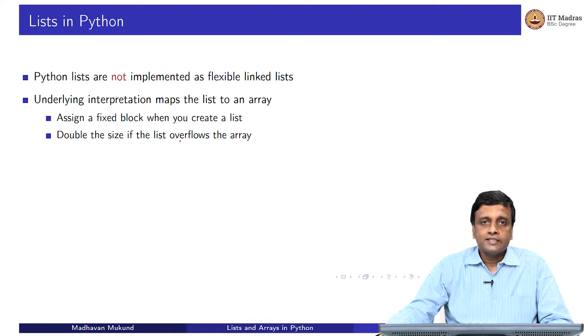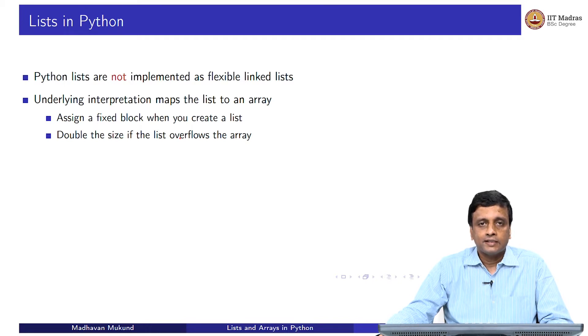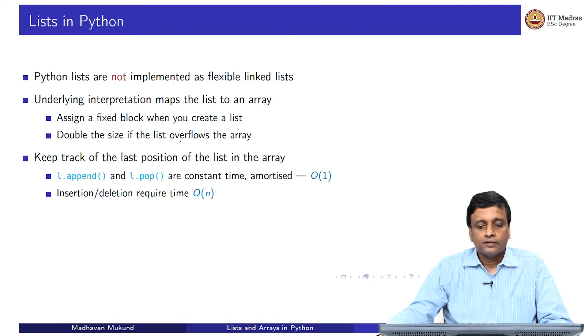In fact, lists in Python are not implemented as flexible linked lists. Rather, they are actually implemented as arrays. When you define a list in Python, Python actually allocates a contiguous block of memory which is much larger than the list is, because the list when you start is typically empty. Even if you declare an empty list, you get a large block of memory. And till that memory fills up, the list will be accommodated in the array. Once your list grows beyond the size of the array that you have, then you will get a new array which is double the size.